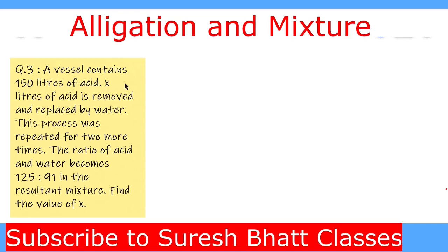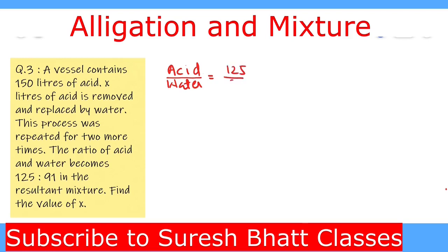The question: a vessel contains 150 liters of acid. X liters of acid is removed and replaced by water. This process is repeated for two more times. The ratio of acid to water becomes 125:91 in the resultant mixture. Find the value of X. We solve this by the formula method. First, we find the ratio of acid to total mixture: acid/total = 125/(91 + 125) = 125/216.